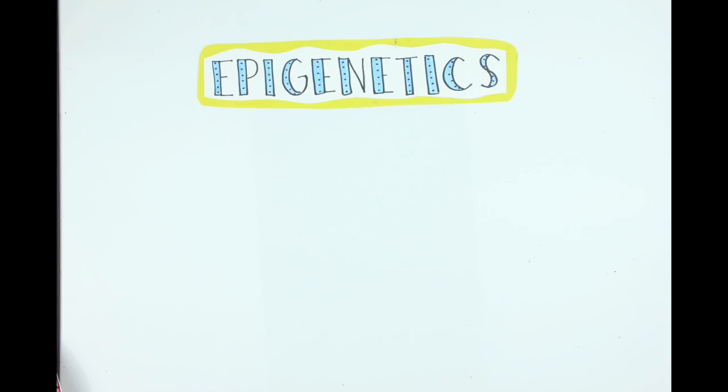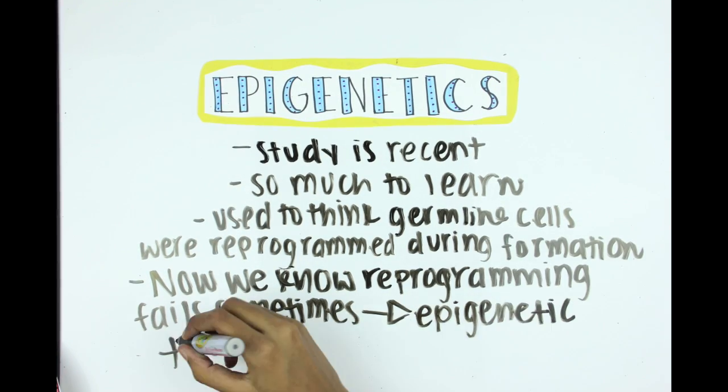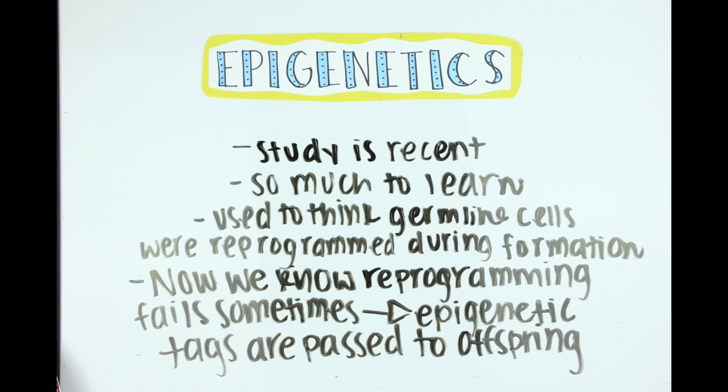So that's the basic gist of epigenetics. The study is pretty recent, and there's so much we've learned. We used to think that sperm and egg cells were reprogrammed during formation, meaning that all epigenetic tags were taken off so that offspring could start fresh. But scientists have found that sometimes the reprogramming fails, causing some of these tags to be passed on.